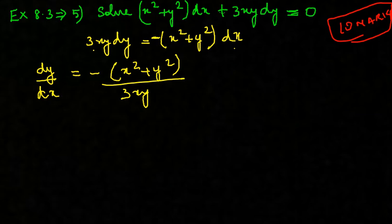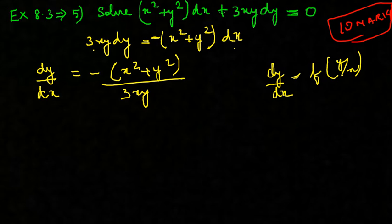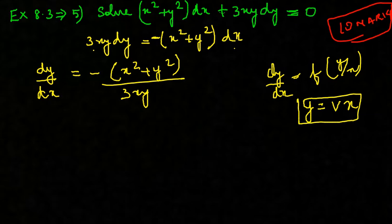Now let's write it in the form dy/dx. So dy/dx becomes minus (x squared plus y squared) divided by 3xy. We can see that dy/dx is of a homogeneous equation of order 1, degree 1, and it's also a function of y/x. So to solve this differential equation we substitute y = vx, and differentiating gives dy/dx = v + x dv/dx.